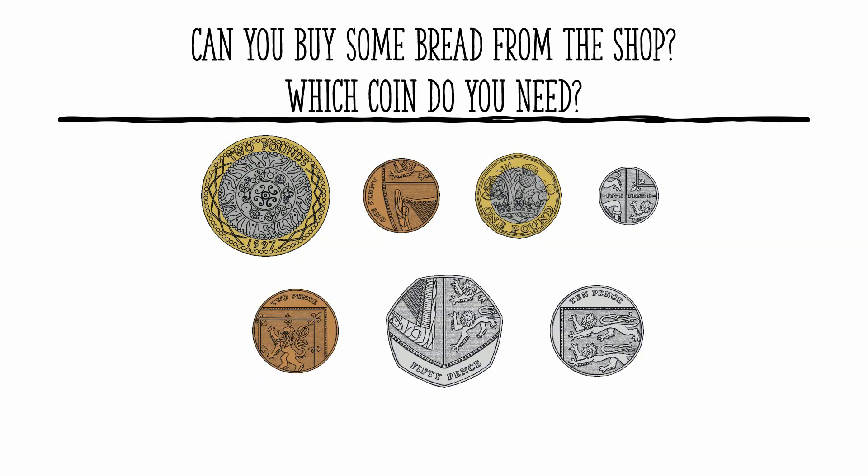Can you buy some bread from the shop? Which coin do you need? The bread costs one pound. Find it with your eyes, point at it with your finger. I hope you are pointing at this coin. This is the one pound coin because it has written on there one pound. Excellent, well done everybody.